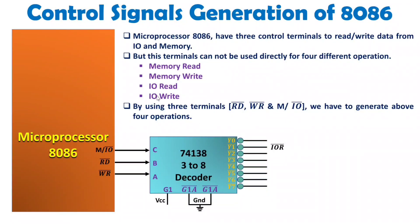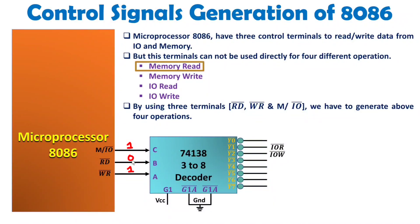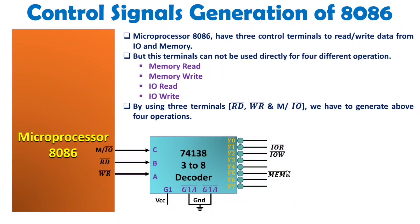For IO Write bar, IO operation means M/IO bar is 0. Write bar is 0 and Read bar is 1, giving input 0, 1, 0 — selecting Y2. So Y2 bar carries the IO Write signal. For Memory Read, memory operation requires M/IO bar = 1. Read bar is 0 and Write bar is 1, giving 1, 0, 1 — which is 5 — so Y5 is selected for Memory Read bar.